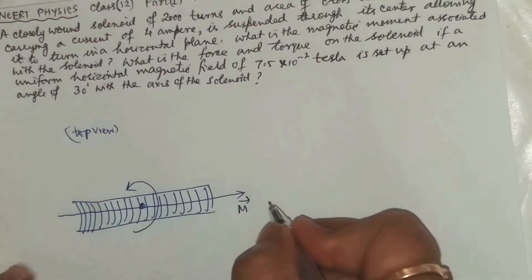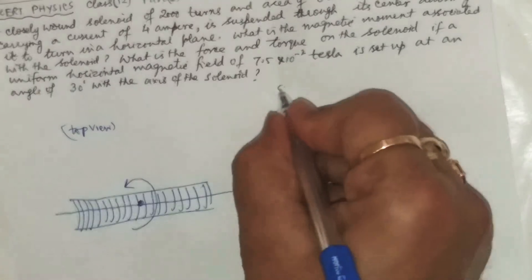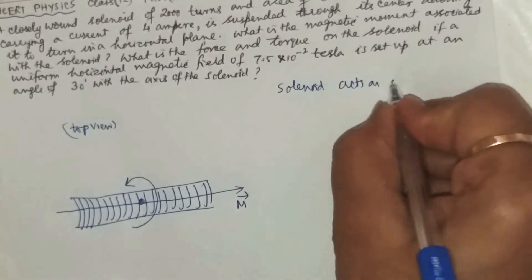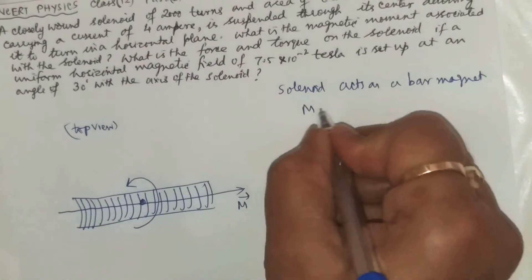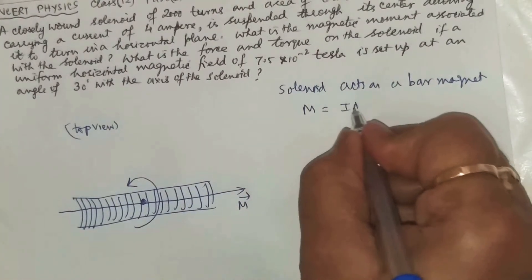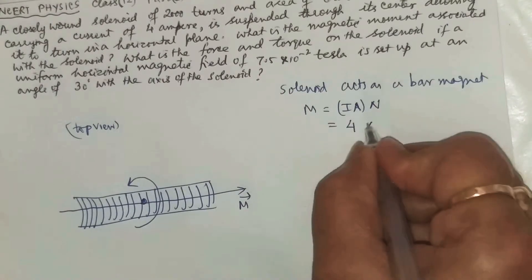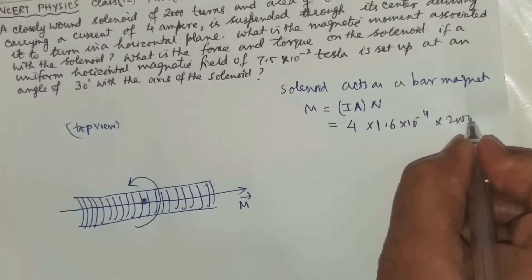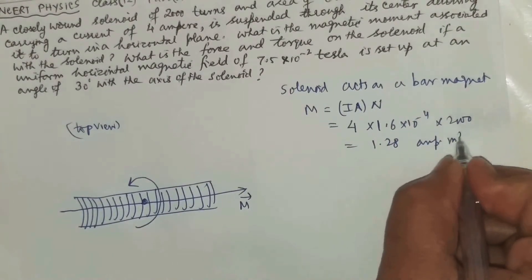So this will be the magnetic moment because the solenoid will be acting as a bar magnet. So what will be the magnetic moment? The magnetic moment should be equal to I into A for each turn multiplied by the number of turns. Let us put the value 4 into 1.6×10^-4 into 2000. This is 1.28 ampere meter square.